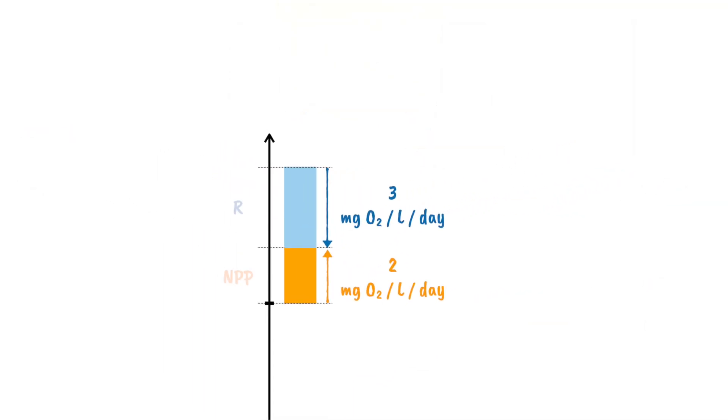And by adding these together, I'd know the total oxygen production prior to respiratory losses, a value which is proportional to GPP.